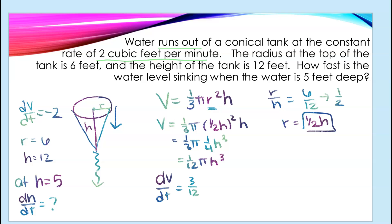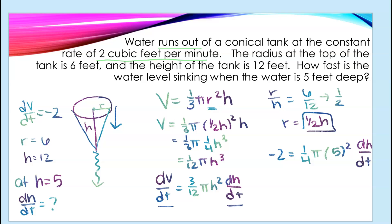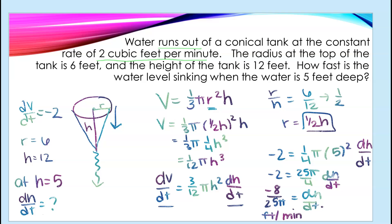Differentiating gives dv/dt = three-twelfths π h² (dh/dt), which is one-fourth π h² (dh/dt). That's the chain rule with respect to dt. Substituting dv/dt = −2 and h = 5, I get −2 = (25π/4)(dh/dt). Multiplying both sides by the reciprocal gives dh/dt = −8/(25π). The units are feet per minute — dh is linear, so it's feet per minute.